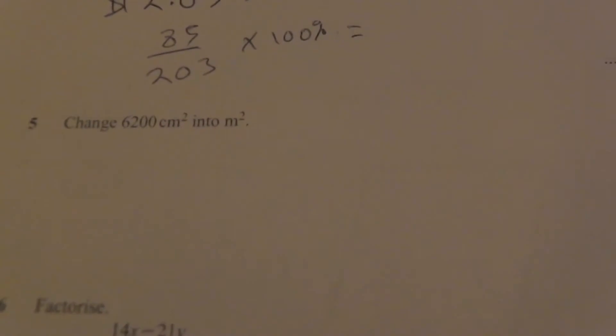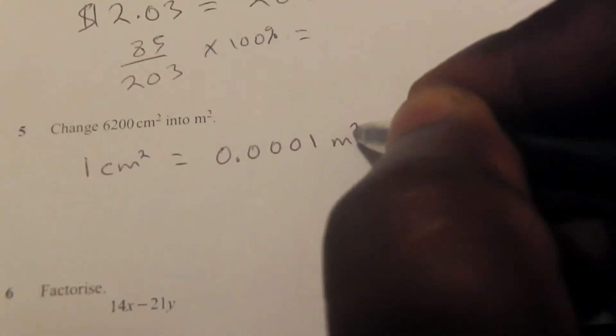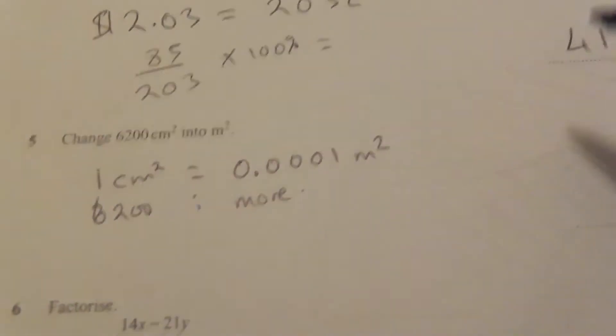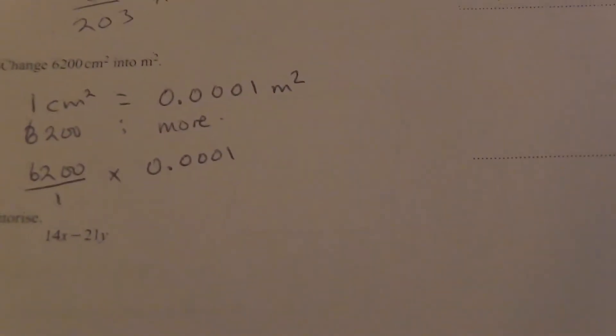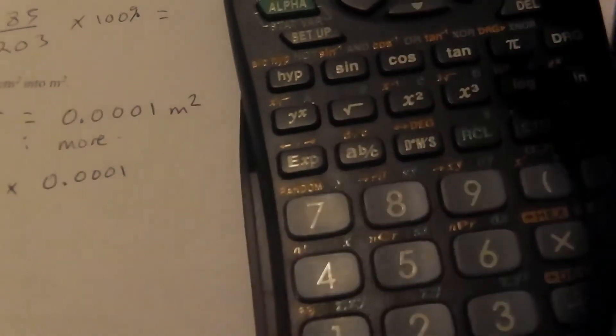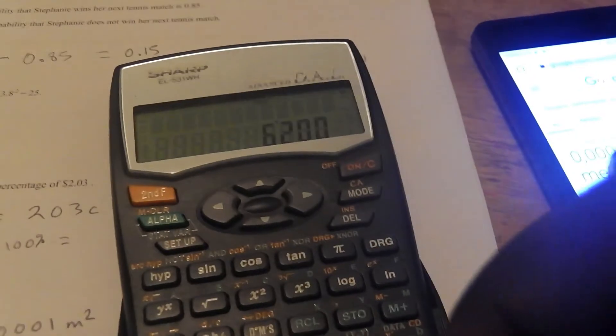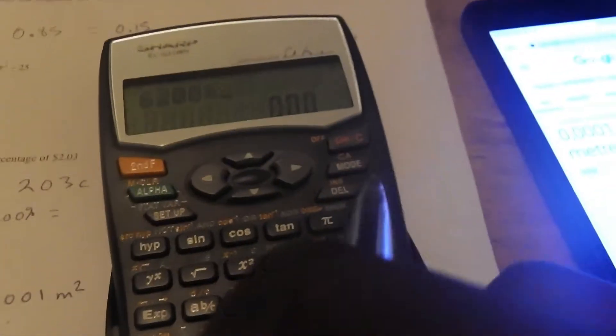Number 5 says: change 6200 square centimetres into square metres. The ratio is one square centimetre equals 0.0001 square metres. Since 6200 is a bigger number, you do 6200 over 1 times 0.0001 to get the amount in square metres. Punching that into the calculator: 6200 times 0.0001 gives 0.62 square metres.